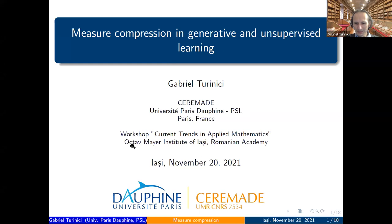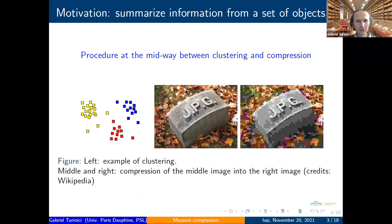Maybe there will be some probability aspects, but I will also insist on the functional analysis aspects. So what is the question in measure compression? It's something which is midway between clustering and compression. So what is clustering? Clustering is you have a set of points and you want to put them in groups.